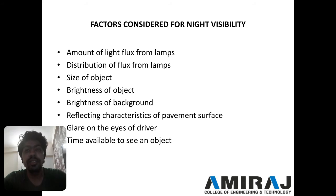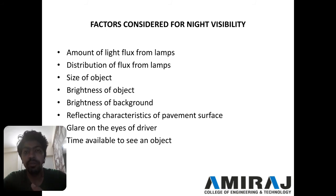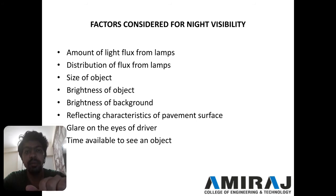If night visibility is easily available, then the person coming in the other direction can easily take judgment or take a decision about how much distance they are from the other vehicle. That time is required and can be provided by providing street lights.